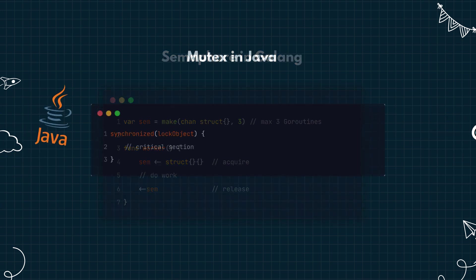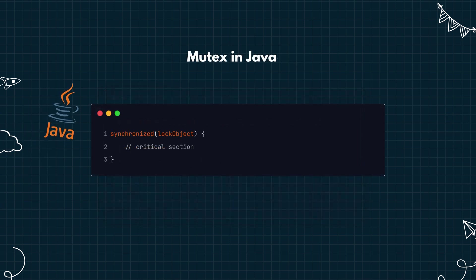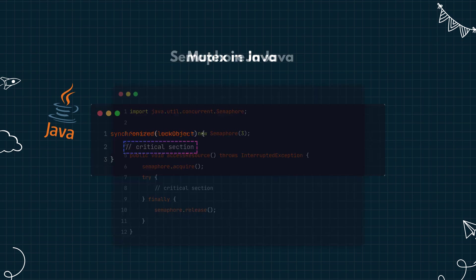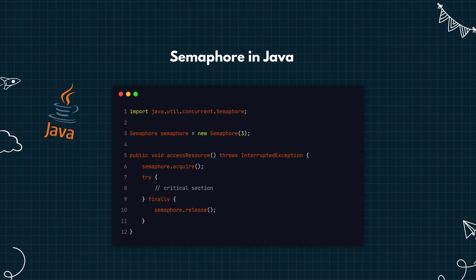In Java, the easiest way to use a mutex is with the synchronized keyword. This locks the block for only one thread at a time, and the lock object ensures exclusive access. Here is a Java semaphore using the java.util.concurrent package. With a count of 3, only 3 threads can access the critical section at once; others will block until a permit is released.